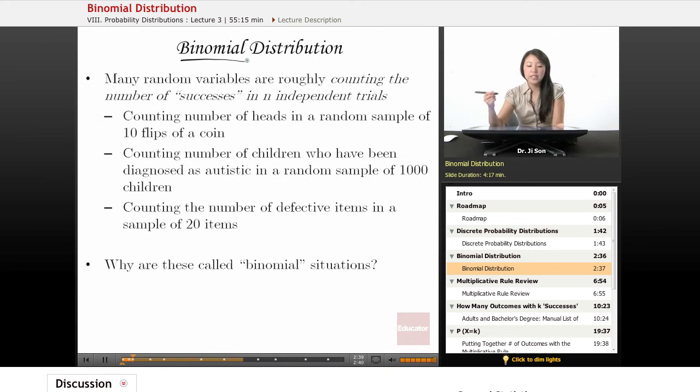Let's talk about binomial distribution. Many random variables are counting the number of successes in N independent trials. By successes, we don't necessarily mean a winning trial or anything - it just means whatever outcome out of two outcomes you're interested in. A lot of times, the random variable is counting how many times that interesting event happens in N number of trials.